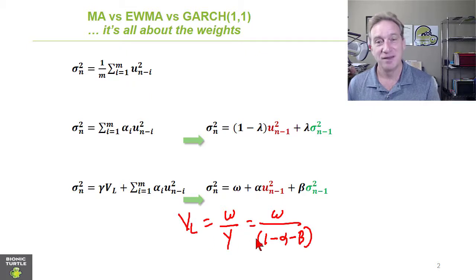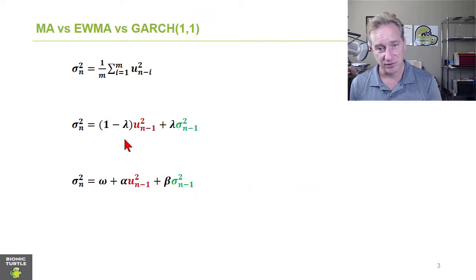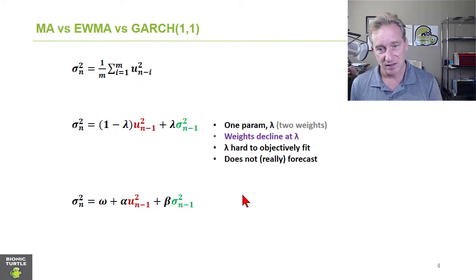A common exam question on the FRM, by the way. Okay, so that's the GARCH 1.1. And then this is the recursive GARCH 1.1 analogous to the recursive version of the exponentially weighted moving average.